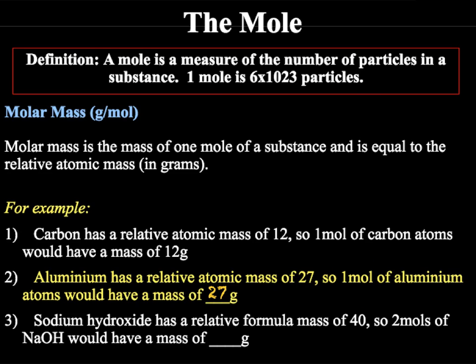And finally, we can use it to work out the molar mass for compounds, such as sodium hydroxide. Sodium hydroxide has a relative formula mass of 40, so two moles of sodium hydroxide would have a mass of twice the formula mass. So the mass of two moles would be equal to 40 times 2, therefore 80 grams.